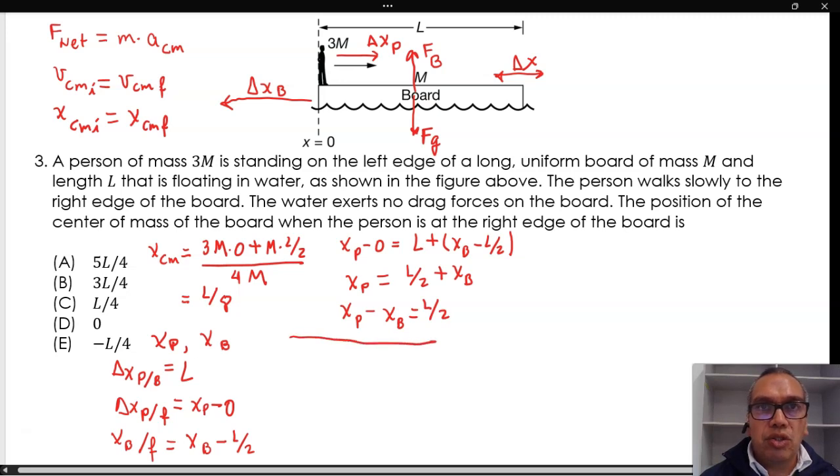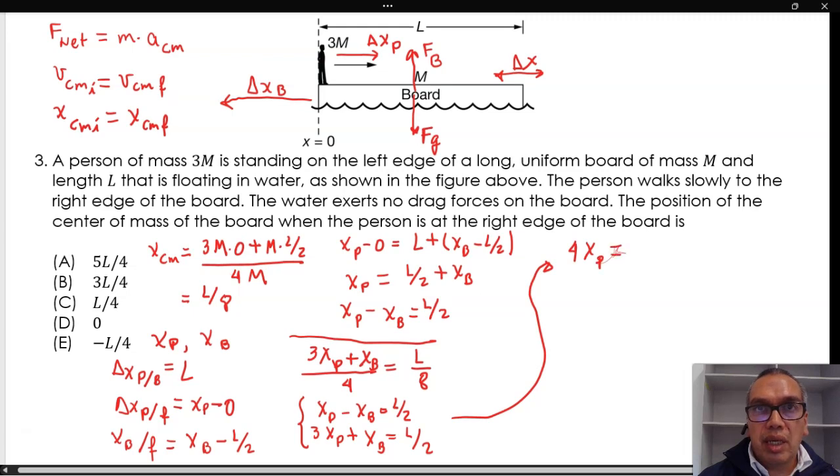If we now combine this equation with the one from the center of mass, 3 times xp plus xb over 4 equals l over 8, we have a nice system of equations with two unknowns. Therefore, we have xp minus xb equals l over 2 and 3xp plus xb equals l over 2. This simplifies to 4 times xp equals l over 2.